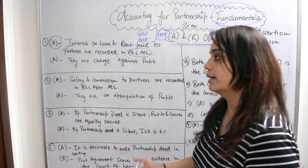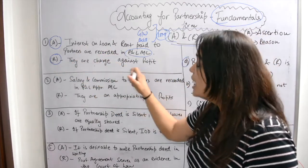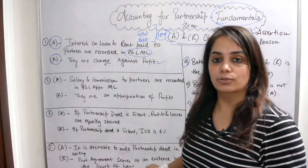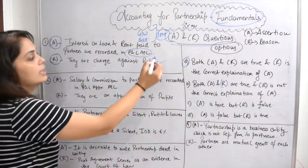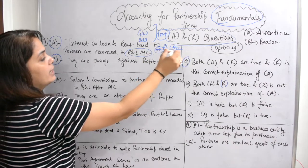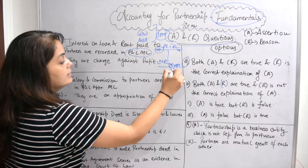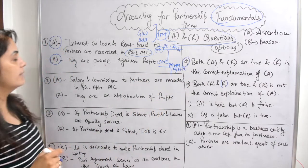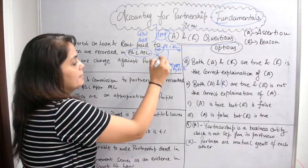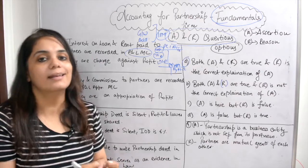This is what we have been studying from the beginning. Now, what is the reason? The reason is: they — meaning interest on loan and rent paid — are charged against profit. This is very correct. In the P&L account, we have expenses on the debit side and income on the credit side, and net profit comes out. Then we make a P&L appropriation account. So interest on loan and rent paid are both expenses, and obviously the profit and loss account records both.